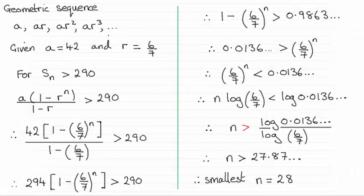Hi there. Now for this question we're given a geometric sequence and told that the first term was 42 and the common ratio was 6 sevenths. And we've got to find the smallest value of n for which the sum is greater than 290.